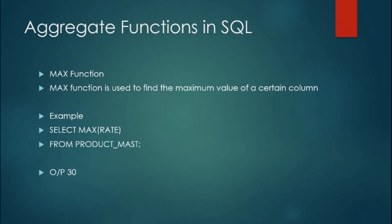Second is the MAX function. What it exactly does is find the maximum value of a certain column. Here you can see that it will fetch the maximum rate from the product_masked table. You can see in the output that it is 30, so the maximum price of any product in this table is 30.